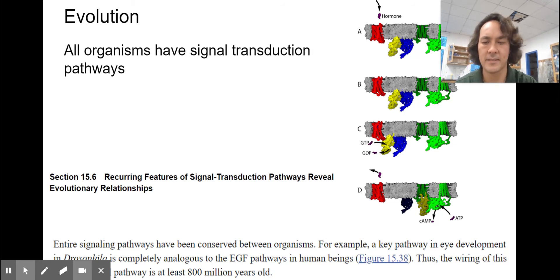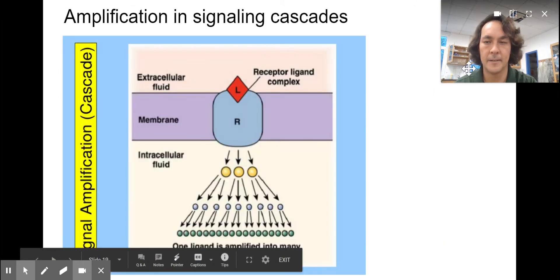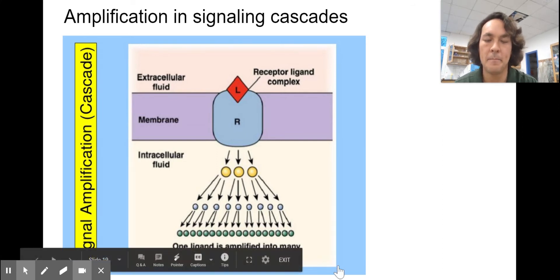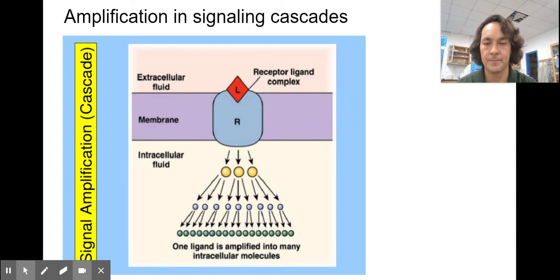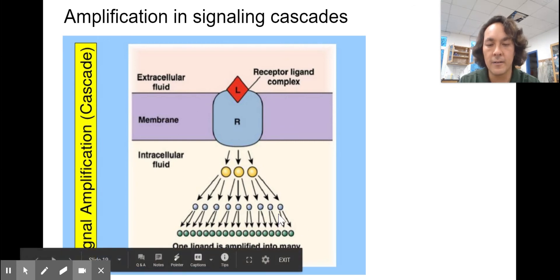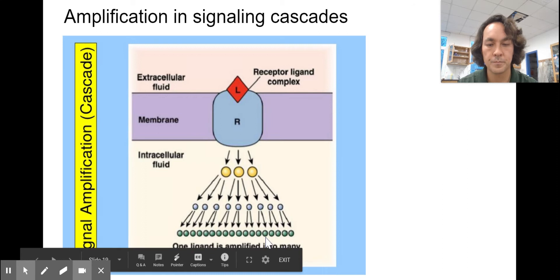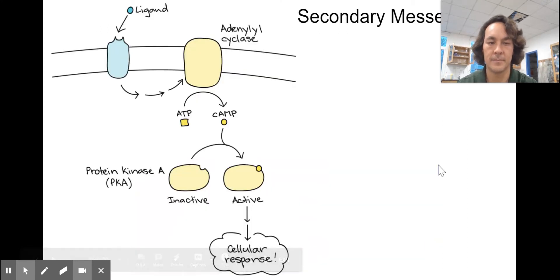This ties into evolution. All organisms have signal transduction pathways. Entire signaling pathways have been conserved between organisms. For example, a key pathway in eye development in humans is completely analogous to one in fruit flies. Here's a really important concept. Notice how one signaling ligand can make a big response and this is called amplification. Look at this picture. It's beautiful. It shows how the ligand is going to dock with the receptor and how it can activate these three yellow kinases, which then activate much more blue ones, which activate many, many, many more green ones. So it can amplify the response. Now you might say, why are there all these steps? Seems redundant. It seems like a waste of time. Well, it happens really fast and it gives the cell the ability to control what's going on here.